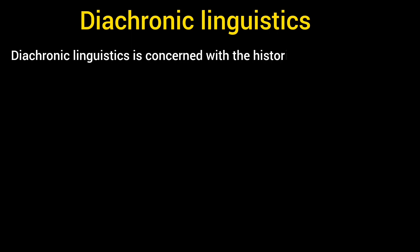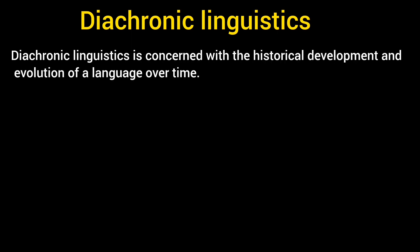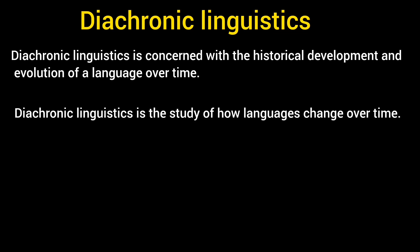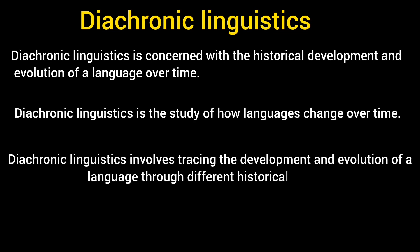On the other hand, Diachronic Linguistics is concerned with the historical development and evolution of a language over time. It looks at how languages change and develop, which is not typically the focus of descriptive linguistics, as it does not aim to describe the current state of a language but rather its history and changes. Diachronic Linguistics is the study of how languages change over time — one of the two main temporal dimensions of language study, the other being Synchronic Linguistics. It involves tracing the development and evolution of a language through different historical periods.